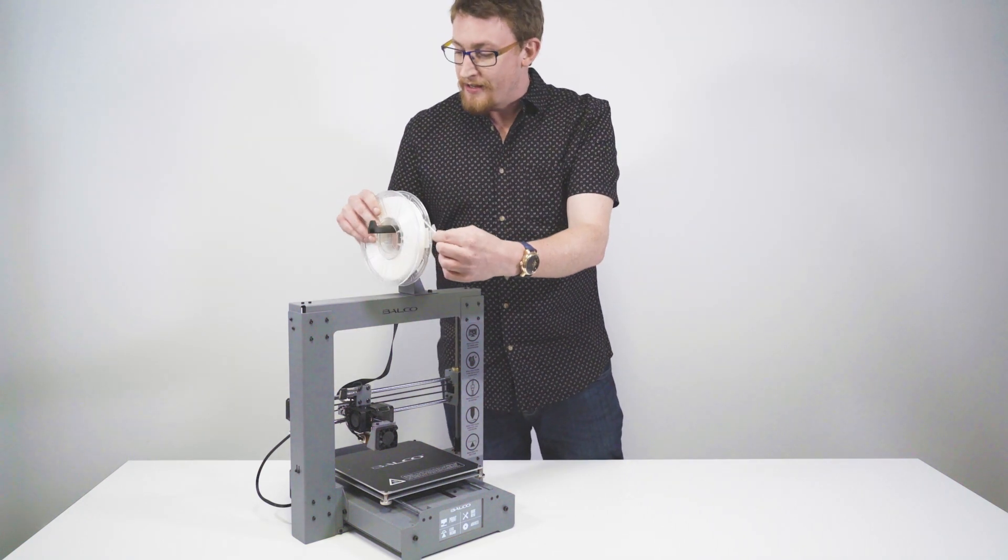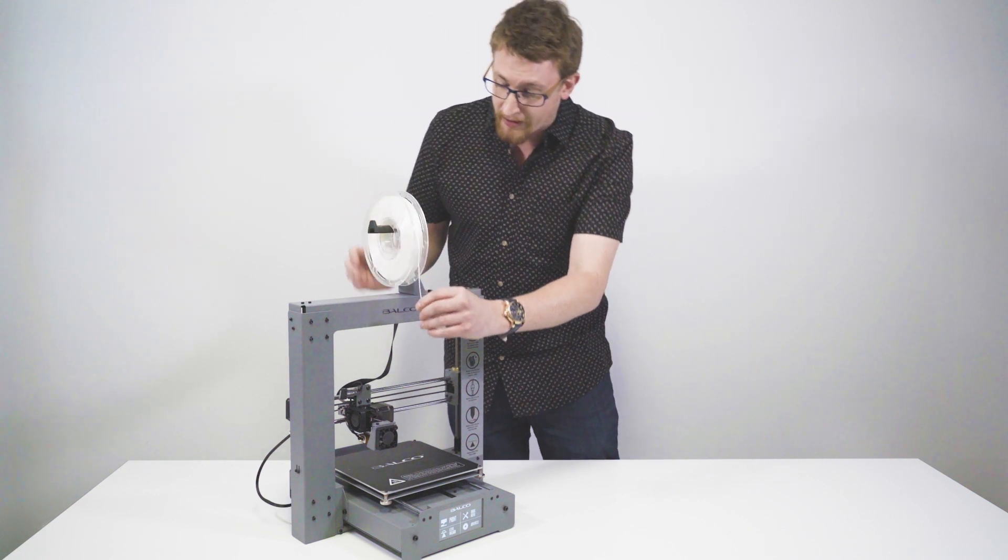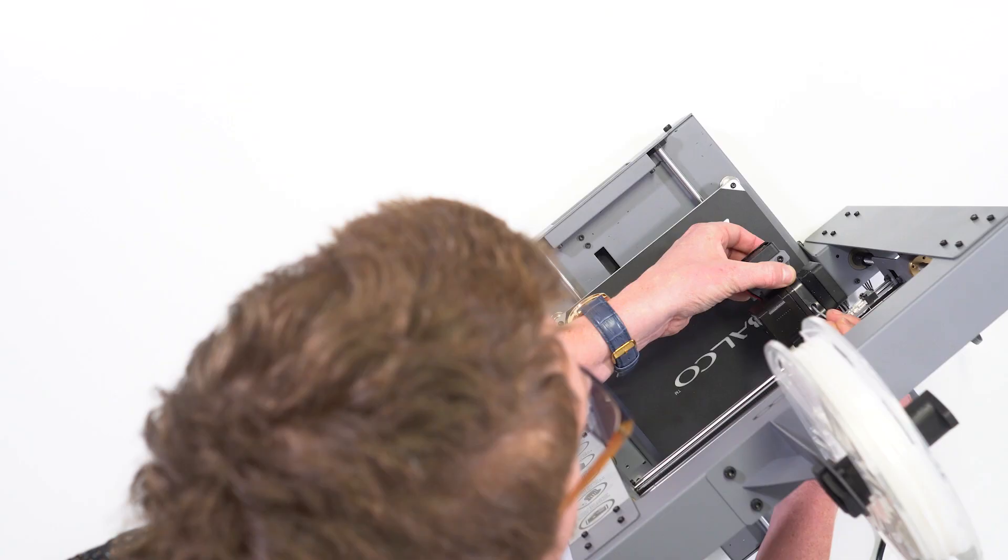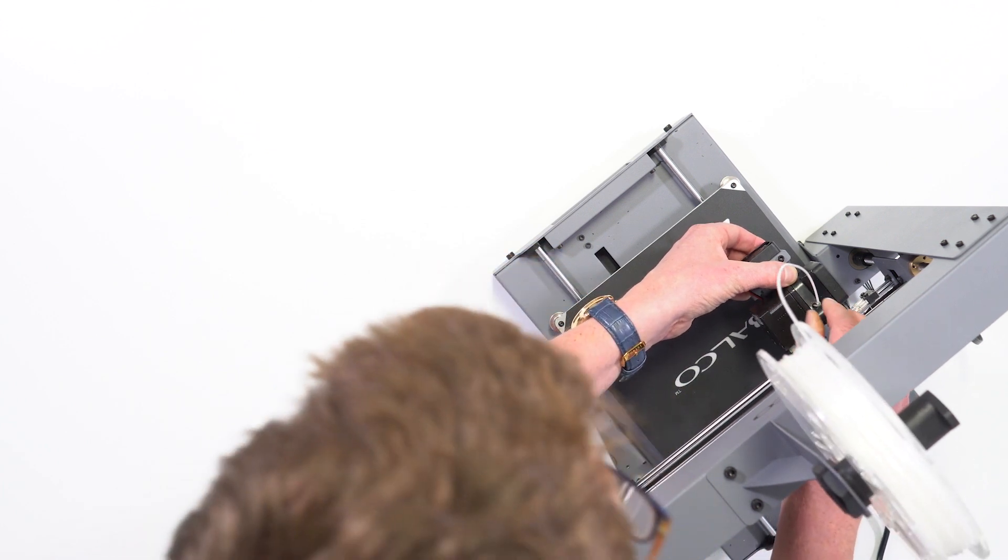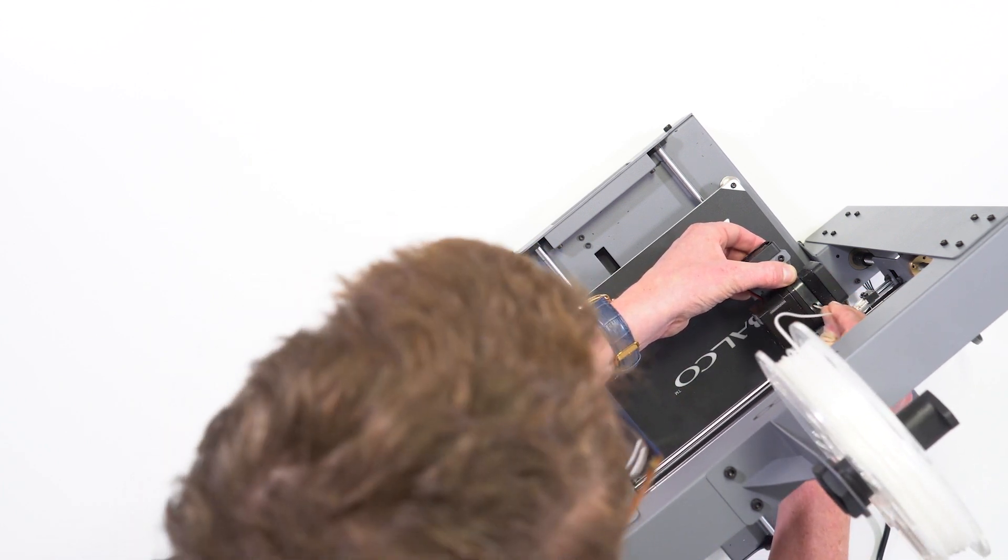The first step is to place your spool on the spool holder like so. Then what we're going to do is feed the filament down into the extruder assembly like so. Make sure you get it pretty tight down there.